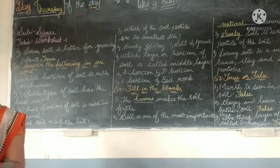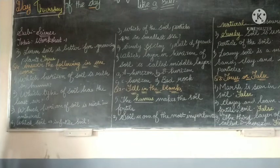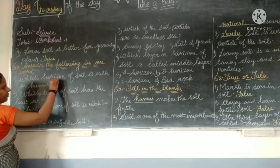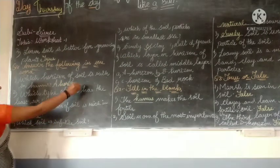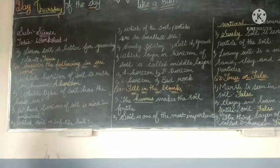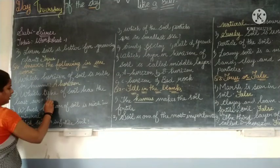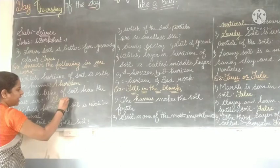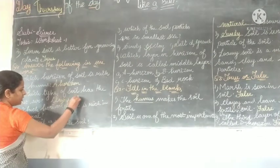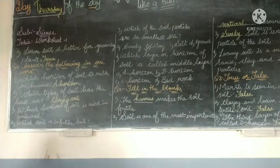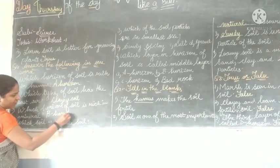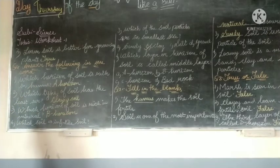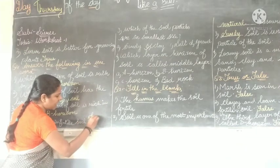Answer the following in one word. Which horizon of the soil is rich in humus? A horizon. Which type of soil has the least air? Clay soil. Which horizon of the soil is rich in minerals? B horizon. Which soil is infertile? Sandy soil.